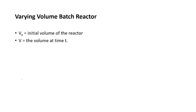Now we will discuss the varying volume batch reactor. As you can guess, here the volume of the batch reactor will vary. Let v0 be the initial volume of the reactor and v be the volume at time t. The relationship between these two is given by: v = v0 · (1 + εa · xa), where xa is the conversion and εa is called the fractional change in volume.